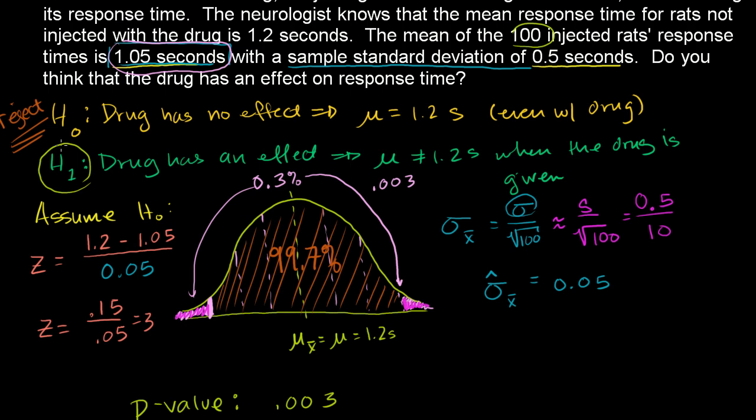In the last video, our null hypothesis was the drug had no effect, and our alternative hypothesis was that the drug just has an effect. We didn't say whether the drug would lower the response time or raise the response time. We just said the drug has an effect, that the mean when you have the drug will not be the same thing as the population mean. And then the null hypothesis says no, your mean with the drug is going to be the same thing as the population mean.